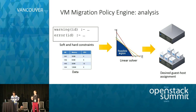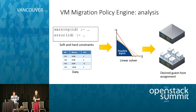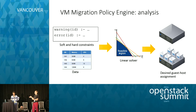Once the VM migration service has been given the policy, what does it do with it? The inputs are the warning and error statements along with the data about what's actually happening in the data center. What we ended up doing was translating that Datalog policy along with the data into a linear program — it turns out a linear program can be solved in such a way that it simply outputs the right assignment of virtual machines to hosts. Once we translate it to a linear solver, that solver tells us the correct assignment of VMs to servers.